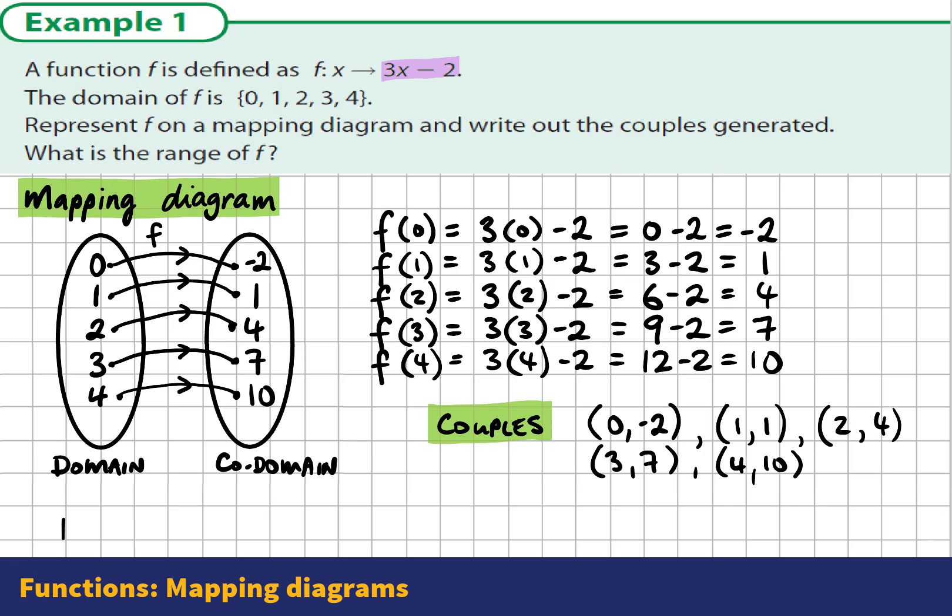We're also asked what is the range of f. So these are the used elements in the codomain. So the range values, and we'll list them using a set bracket here,